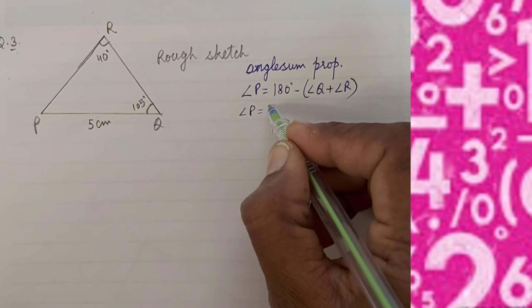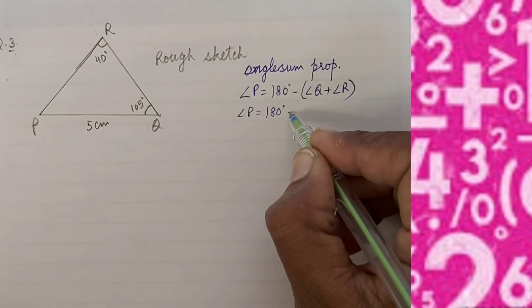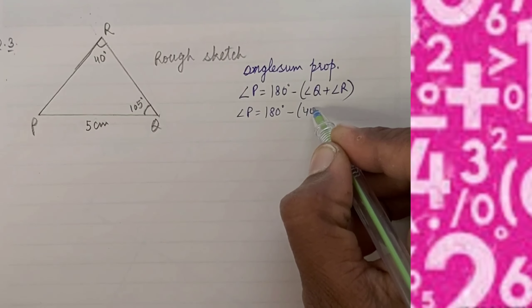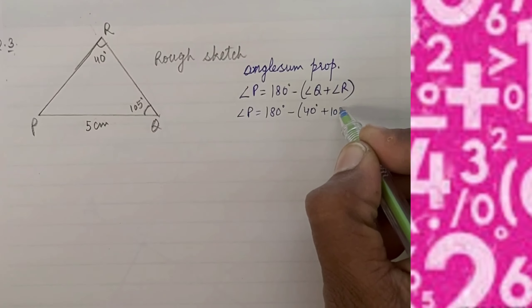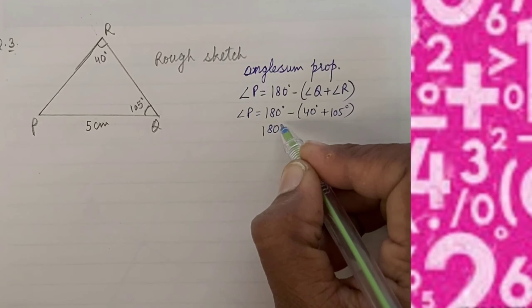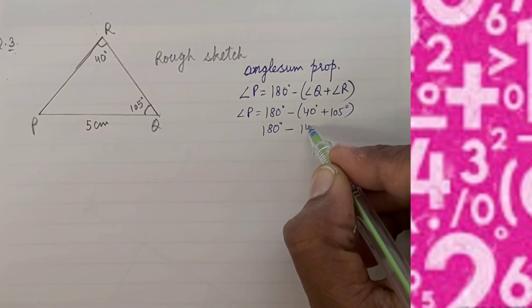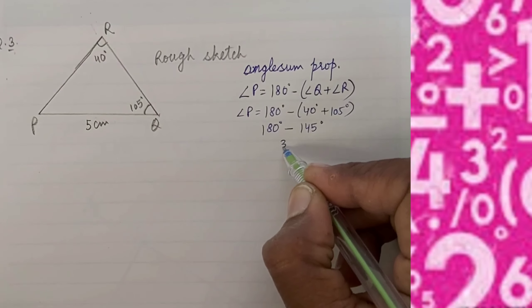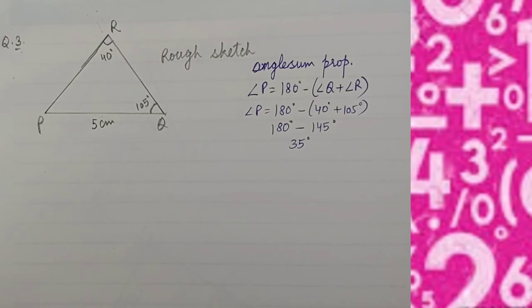So angle P equals 180 degrees minus the sum of 105 degrees and 40 degrees. So angle P equals 35 degrees.